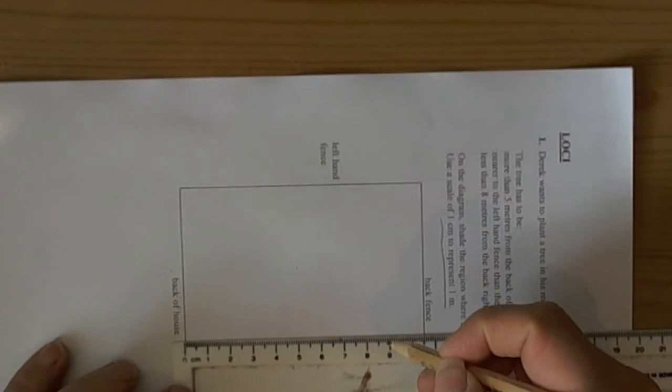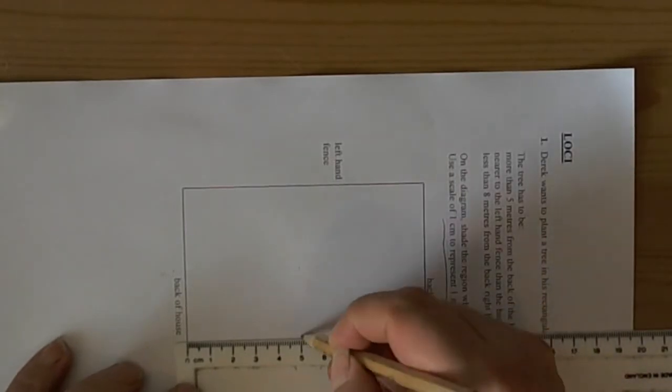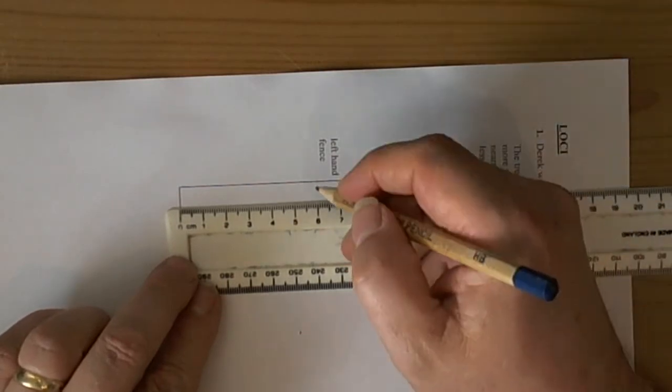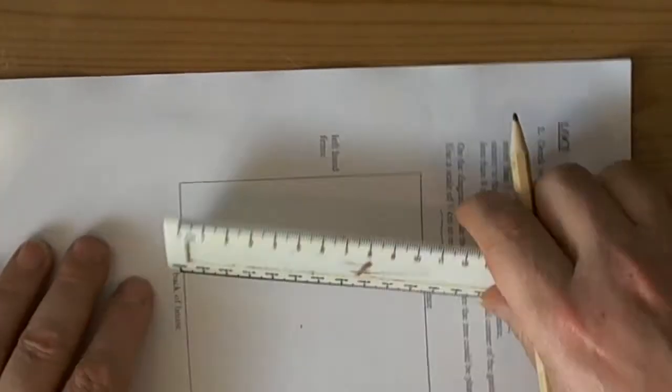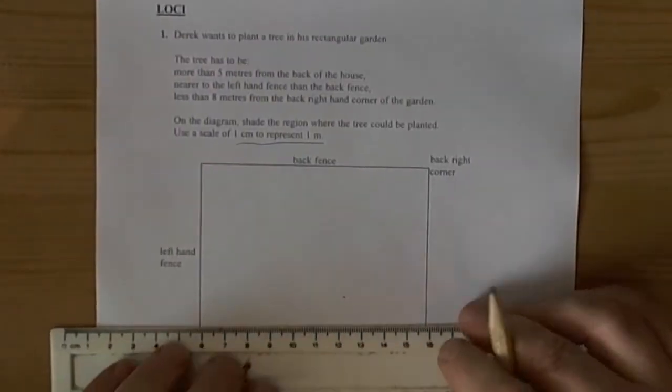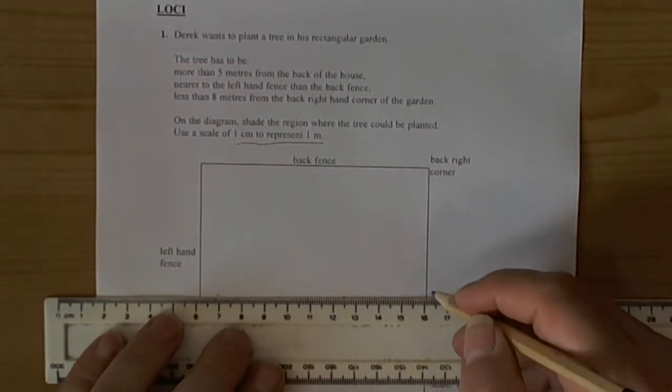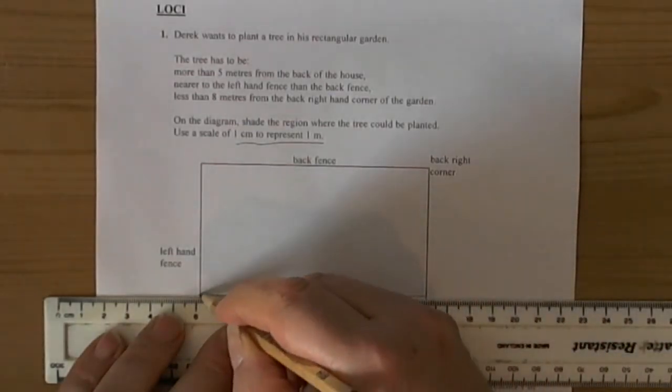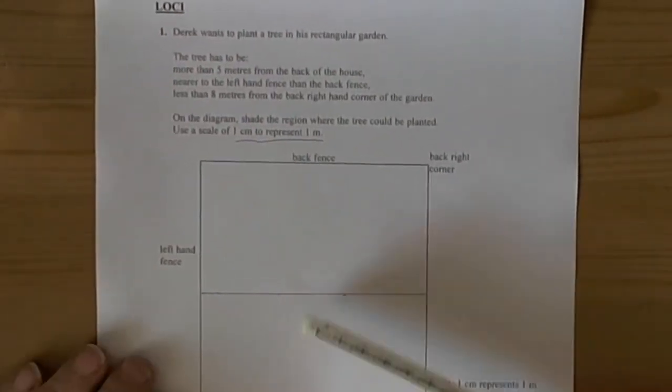So 1, 2, 3. This allows us to line our ruler up properly so that we can draw a parallel line. Because the tree has to be more than 5 metres from the back of the house. So that's our first condition done.